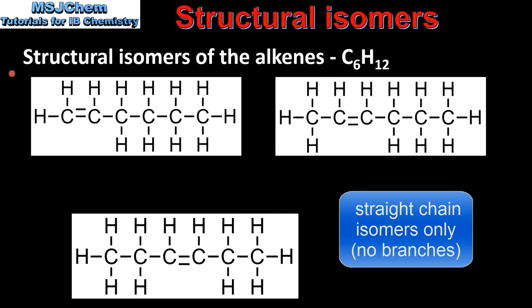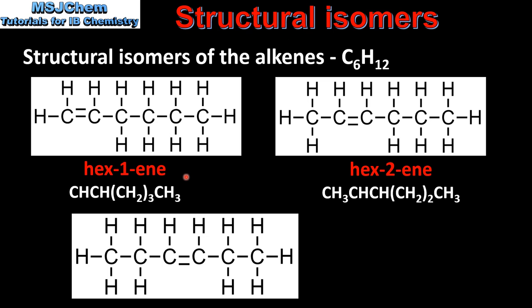And finally we look at the structural isomers of the alkenes. In this example we have C6H12. So we start with hex-1-ene. Then we have hex-2-ene — the double bond is between carbon number 2 and carbon number 3. And finally we have hex-3-ene.